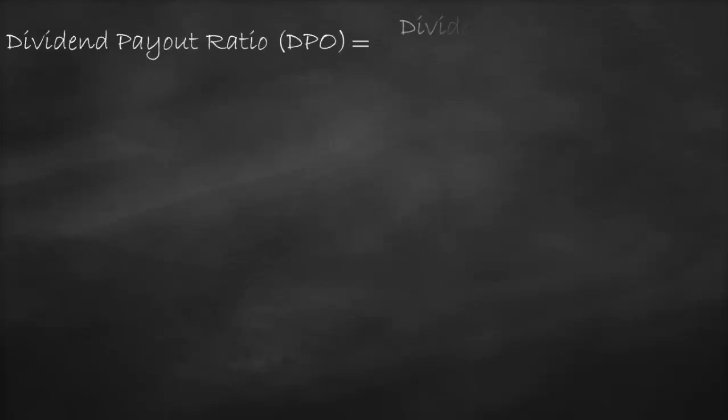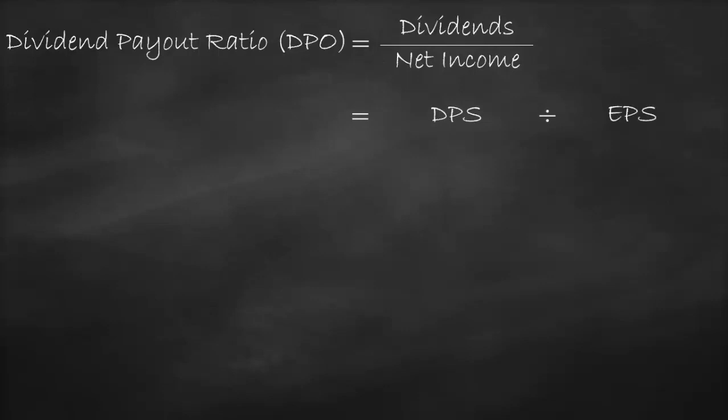The dividend payout ratio is calculated as Dividends divided by Net Income. We can rewrite the dividend payout ratio as Dividend per share divided by Earnings per share.